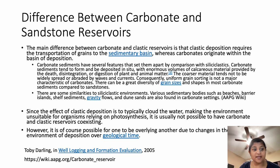Now I'll talk about the difference between carbonate and sandstone reservoirs. The main difference between carbonate and clastic reservoirs is that clastic deposition requires the transportation of grains to the sedimentary basin, whereas carbonates originate within the basin of deposition. Carbonate sediments tend to form and be deposited in situ, with enormous volumes of calcareous material provided by the death, disintegration, or digestion of plant and animal matter. The coarser material tends not to be widely spread or abraded by waves and currents, so uniform grain sorting is not a major characteristic of carbonates, and there can be a great diversity of grain sizes and shapes compared to sandstones.